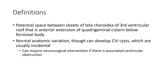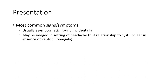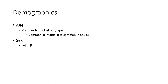If there is associated ventricular obstruction, the most common symptom is usually asymptomatic or found incidentally. May be imaged in the setting of ventriculomegaly. The relationship of CVI to cysts is unclear.